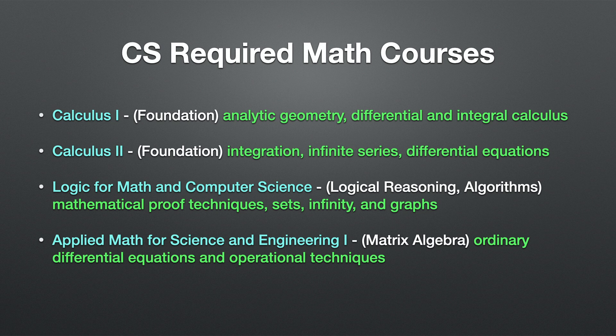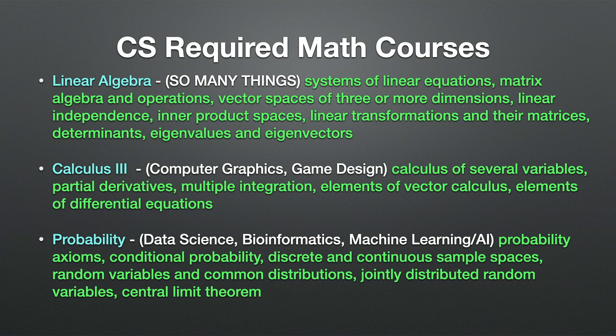After that, I took applied math for science and engineering 1, which dealt with ordinary differential equations and operational techniques, and also introduced me to matrix algebra. Moving on, I took linear algebra, which has many applications in computer science and is probably what I consider to be the most important course to take for a computer science role. This course covered systems of linear equations, matrix algebra and operations, and vector spaces of three or more dimensions.